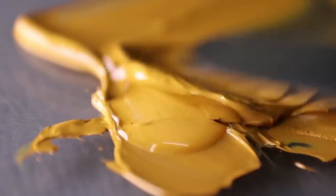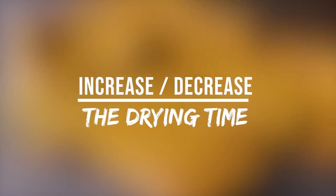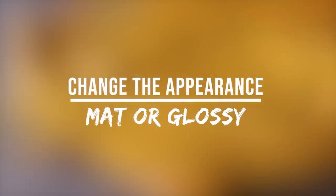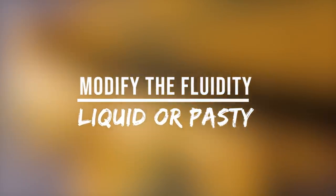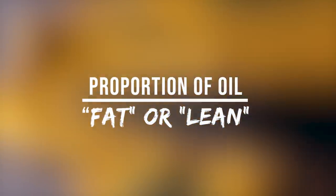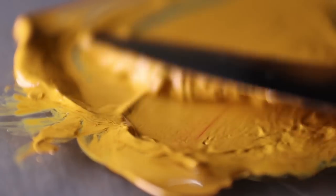Depending on what you put in your medium, you can do different things: increase or decrease the drying time, change the appearance — matte or glossy — change the fluidity, make the paint more liquid or more pasty, and finally change the proportion of oil to make the paint fatter or leaner, which allows you to follow the famous fat-over-lean rule.